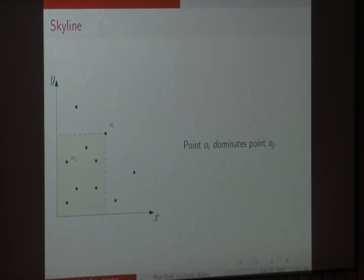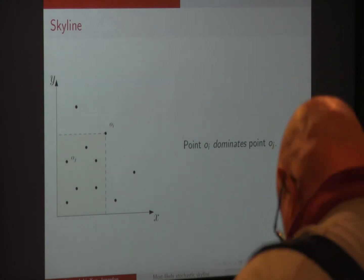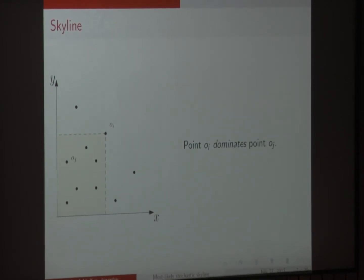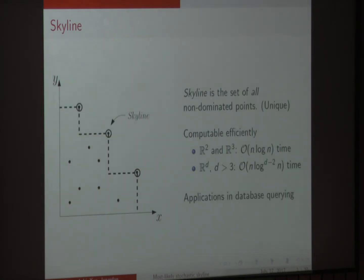Let me start with the view of the skyline. The skyline is a complicated geometry. Given a set of points in the plane, we say that point O sub i dominates point O sub j. The skyline is simply the set of all non-dominated points. In this picture, the skyline has some of the points that form a staircase. It is unique, and it is well-known that we can compute it efficiently in higher dimensions. The skyline has many applications, particularly in multi-objective optimization.